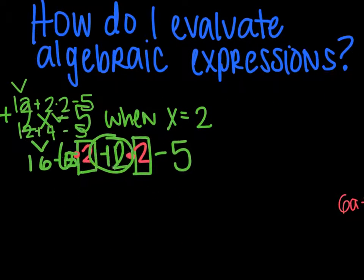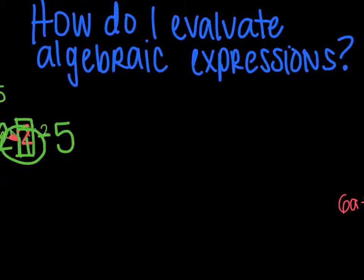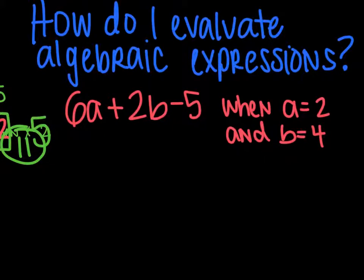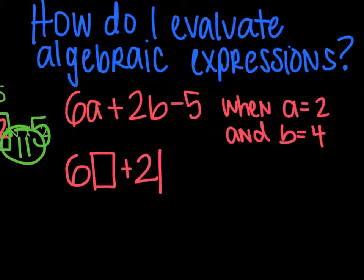So PEMDAS pizzas are not going away. You're going to keep using them. Here's your next one. 6a plus 2b minus 5 when a equals 2 and b equals 4. You're going to plug it in again. This time though you have to plug in a number for your a and your b. They're different values.